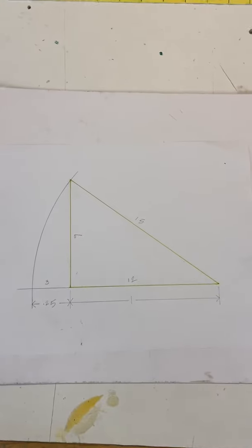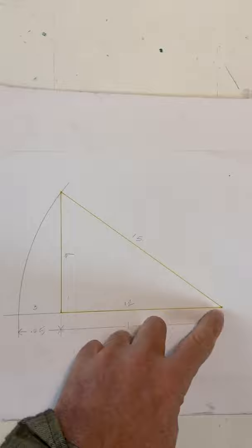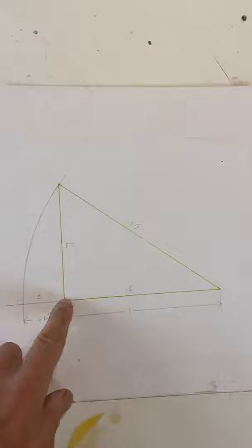Here's this image again. You can't entirely get away from paperwork when you're studying roof framing. This is a 9-12 pitch common rafter: 12 inches of run, 9 inches of rise, and the hypotenuse is a whole number of 15.